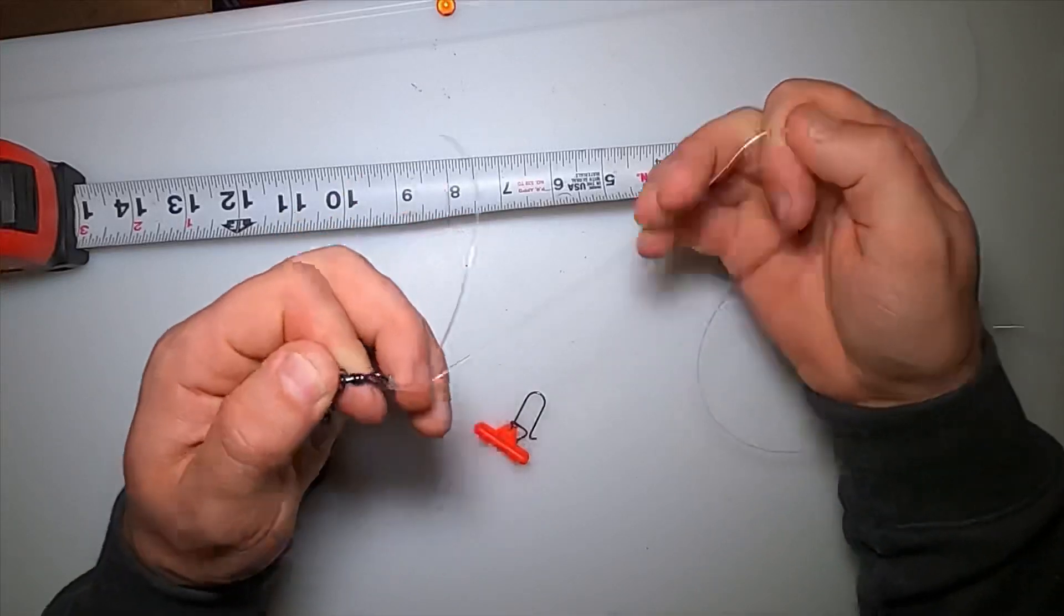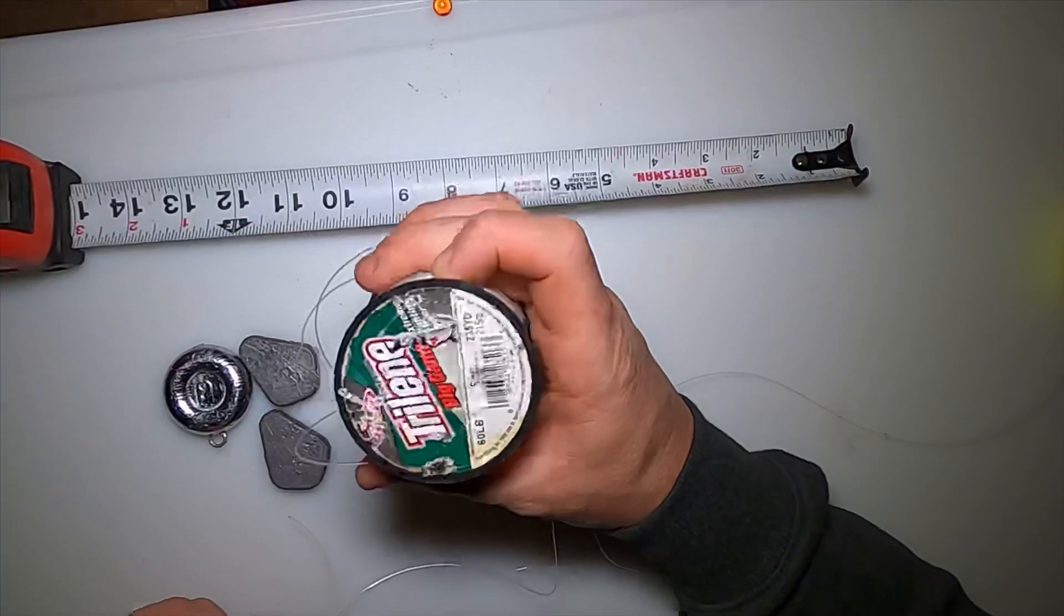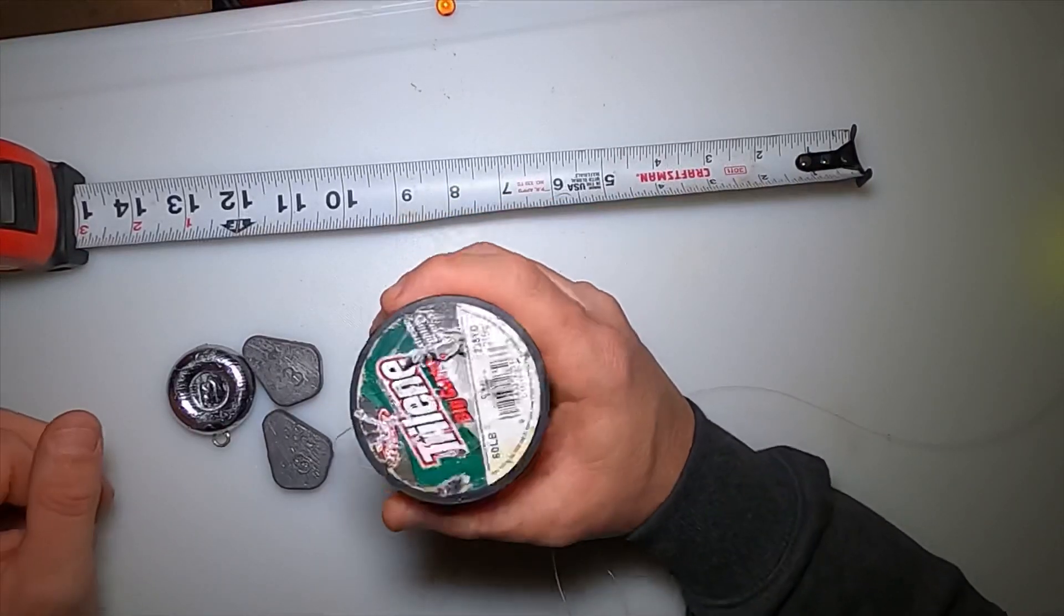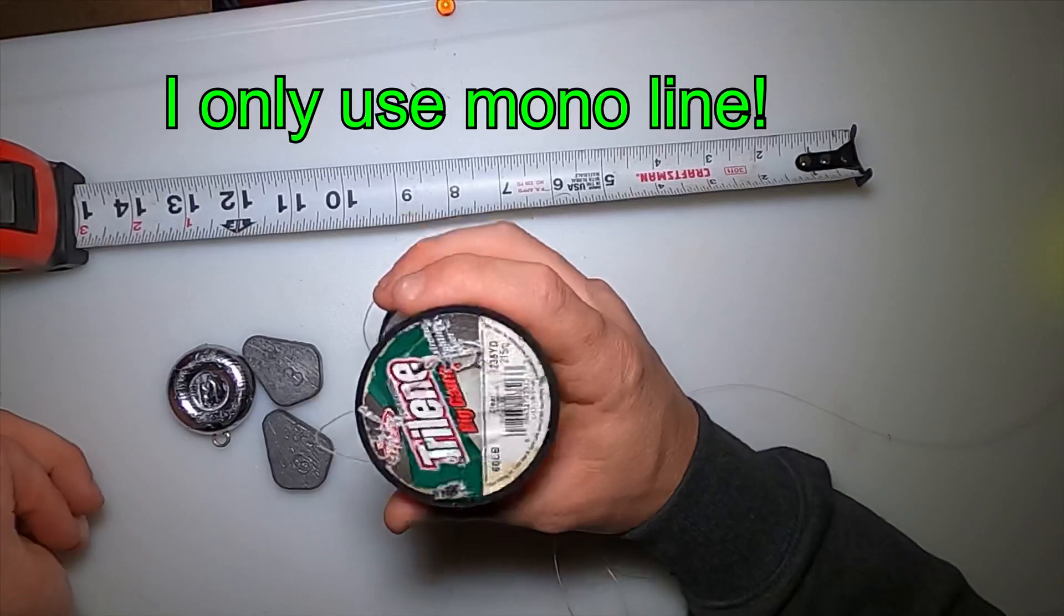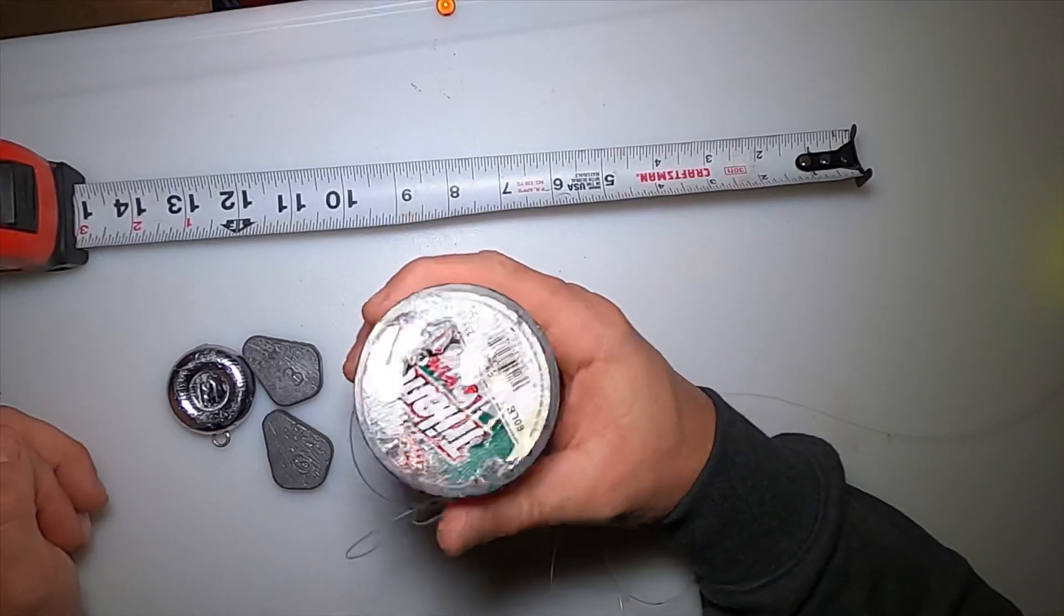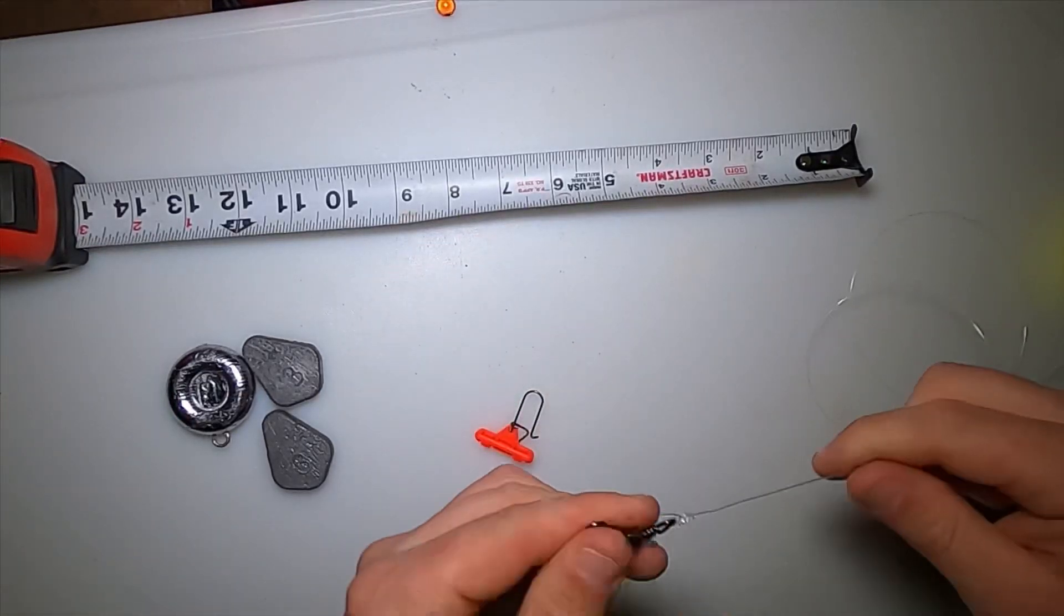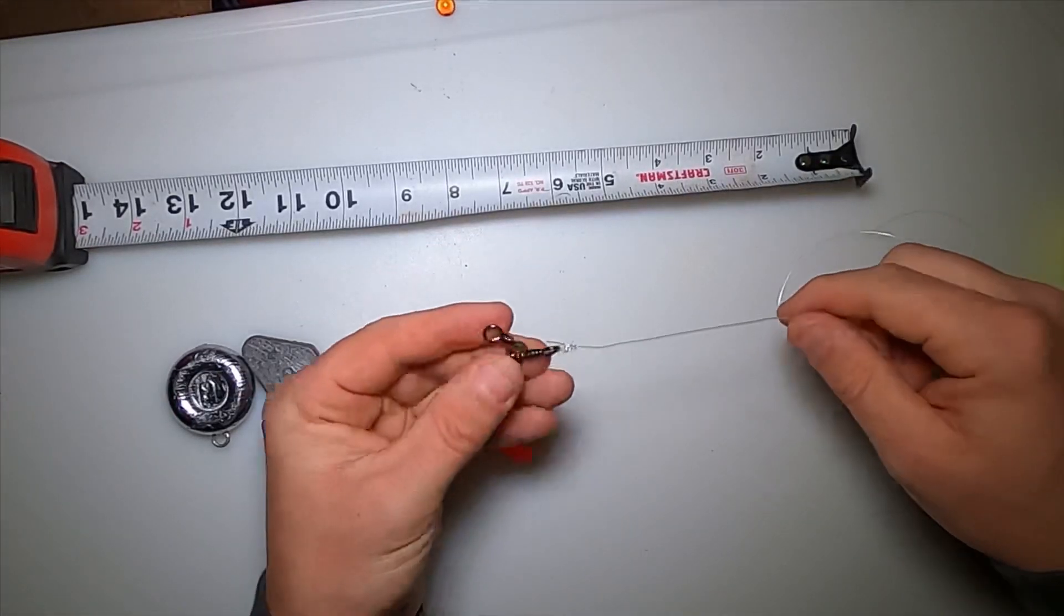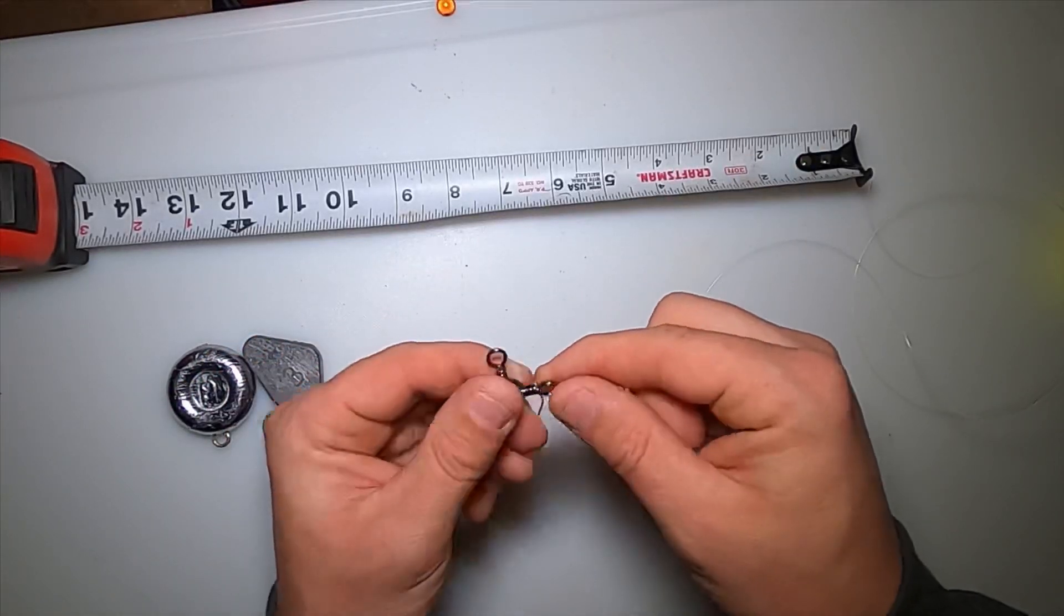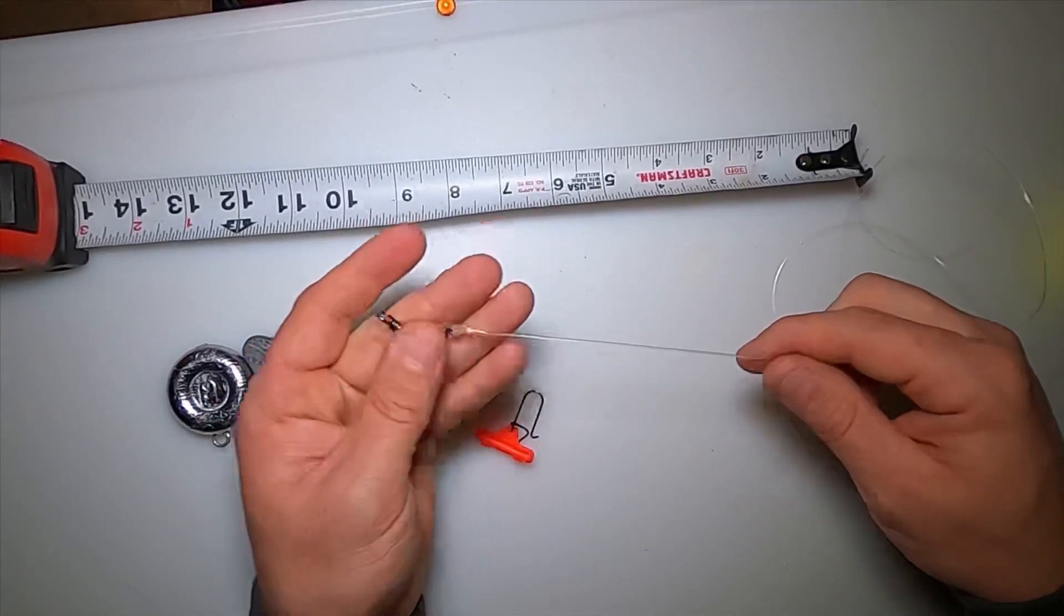I use that 60-pound Berkeley Big Game or the Whisker Seekers leader line, or there's a few companies that make leader line, but it's just what I had on hand. You got your leader attached to the swivel.